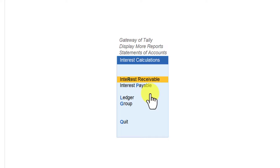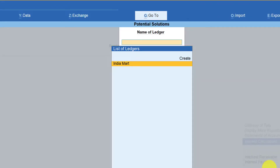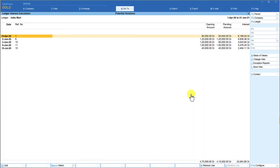This option is similar to your outstanding report. To see interest receivable for all ledgers, select 'Interest Receivable.' 'Interest Payable' is for when you set up interest calculation for Sundry Creditors ledgers — to know the interest accumulated on overdue outstanding you owe. You can also select a particular ledger to view its interest amount. Since we enabled interest for only one ledger, select Indiamart from the list Tally displays.